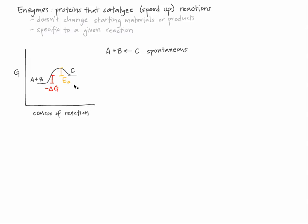Molecule C can also bind to the enzyme, and the enzyme can distort C in such a way that it makes it more likely to break into A and B. Here's the activation energy for that reverse process, with a negative delta G. We may expect that the reaction will proceed more quickly in the reverse direction, from C to A and B, than in the forward direction, because the activation energy is smaller in that direction. But if there's a whole lot of A and B around, and not very much C, then it's more likely that the enzyme will collide with A and B, so the reaction rate is faster in the forward direction, from A and B to C.